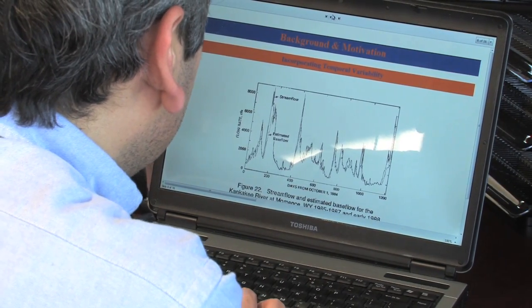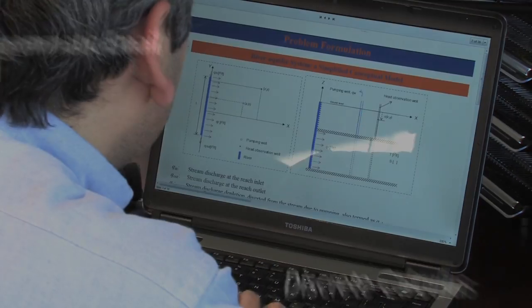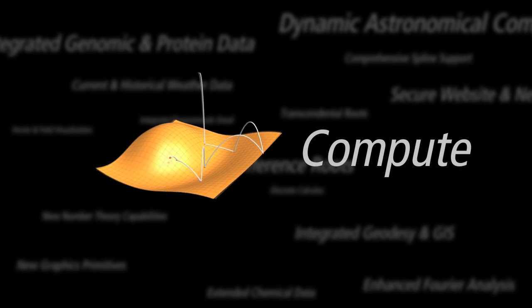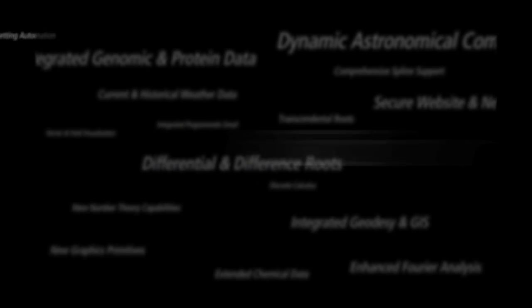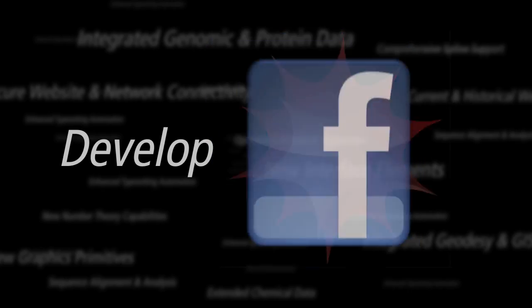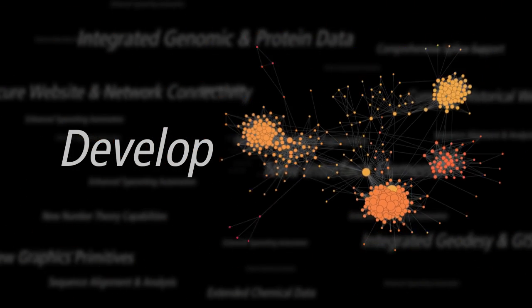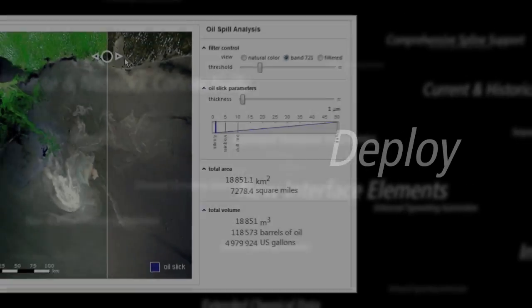Mathematica has also become the software of choice for academic researchers because it offers the ideal combination of flexibility, power, and precision. Rather than requiring different toolkits for different jobs, Mathematica integrates the world's largest collection of algorithms, high-performance computing capabilities, and a powerful visualization engine in one coherent system.